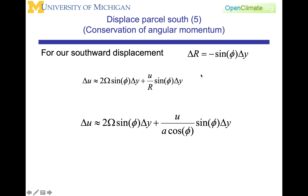For our southward displacement, we can calculate that delta r is equal to minus the sine of the latitude times delta y. Making that substitution, we can relate delta u — the change in the relative velocity — to the displacement delta y. It's going to be two omega sine of the latitude times delta y, plus u over r times sine of the latitude times delta y. Hence, delta u is approximately two omega sine latitude times delta y, plus u over (a cosine latitude) times sine latitude times delta y, where we've used the definition that a cosine latitude equals r.